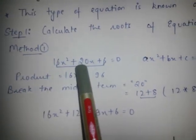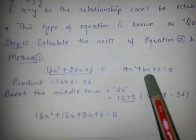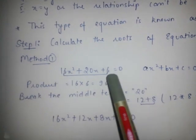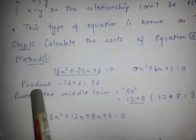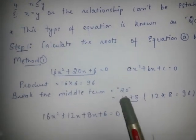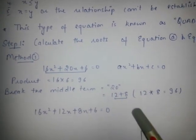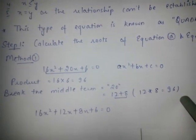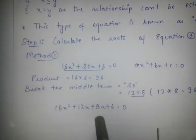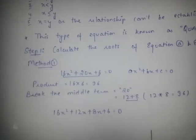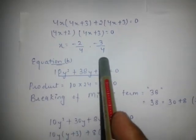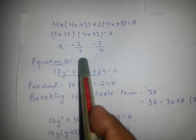This is our equation A. You can write it in this form. Firstly you have to find the product of A and C. Here A is 16 and C is 6, so the product is 96. Break the middle term, which is B = 20, into two terms such that the product of those terms equals 96. After breaking, we get two values: 12 and 8. Write the equation in this form — this is the factorization method. Taking 4x common from the equation, we get two values of x: minus 2 by 4 and minus 3 by 4.